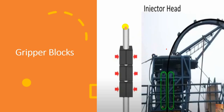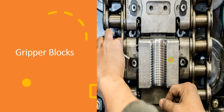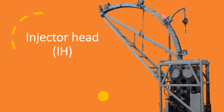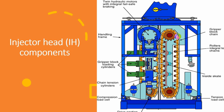The gripper blocks surround the coiltube, and as they rotate with the chain, they inject or pull the coiltube in or out of the well. This is a single gripper block — the chain has gripper blocks along its entire length. As you can see, all of this gray color represents gripper blocks.